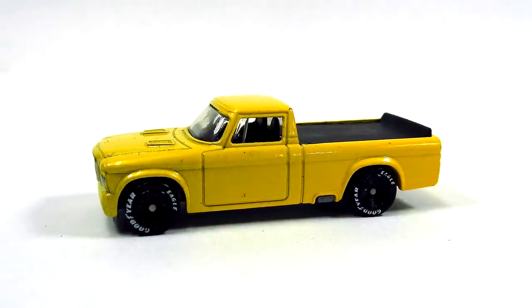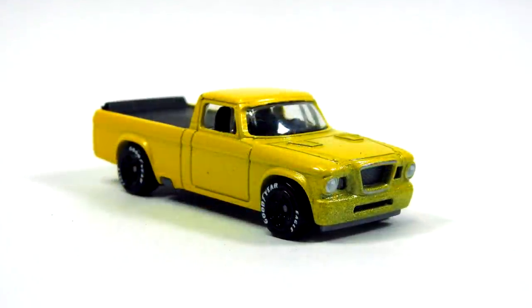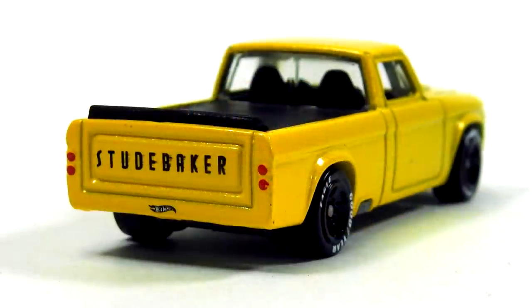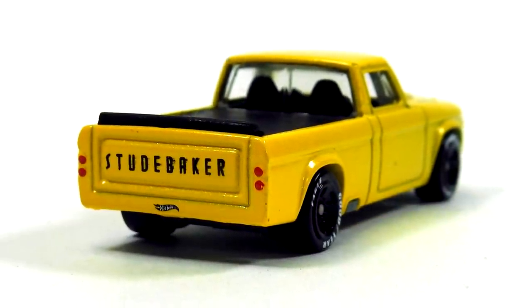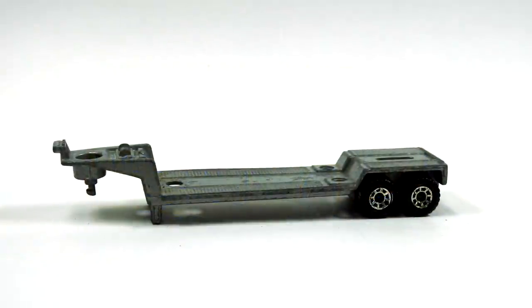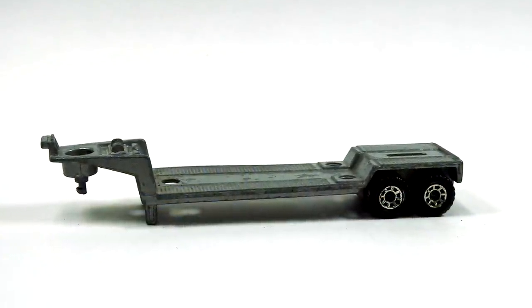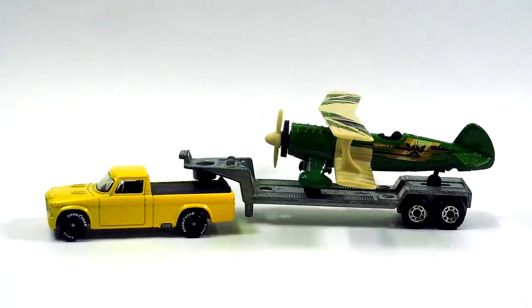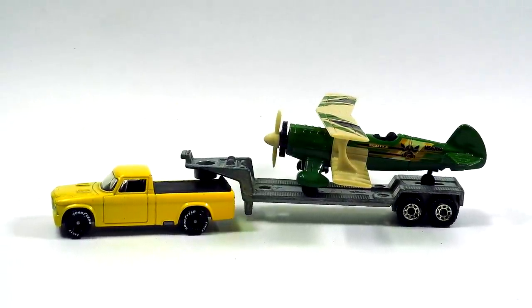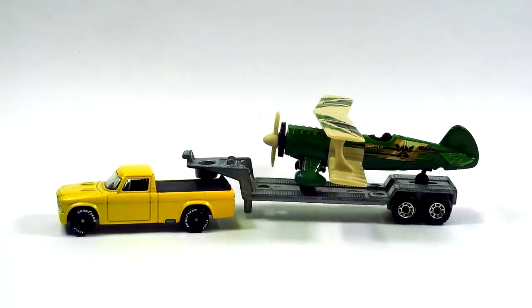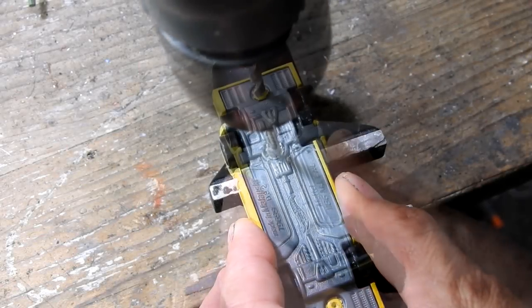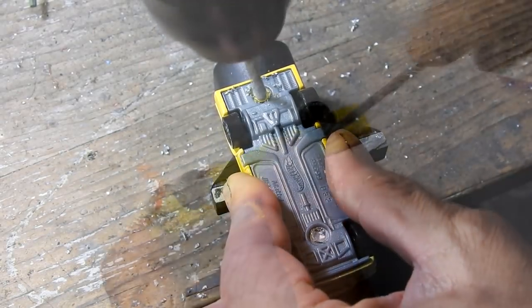I'm gonna be using the Matchbox biplane there, this Hot Wheels 63 Studebaker Champ, and an old Matchbox flatbed trailer. I'm gonna be putting them all together like this so the Champ is towing around the biplane. I don't know if this is a real way you'd tow around a biplane, who knows. That's the great thing about playing with toys.